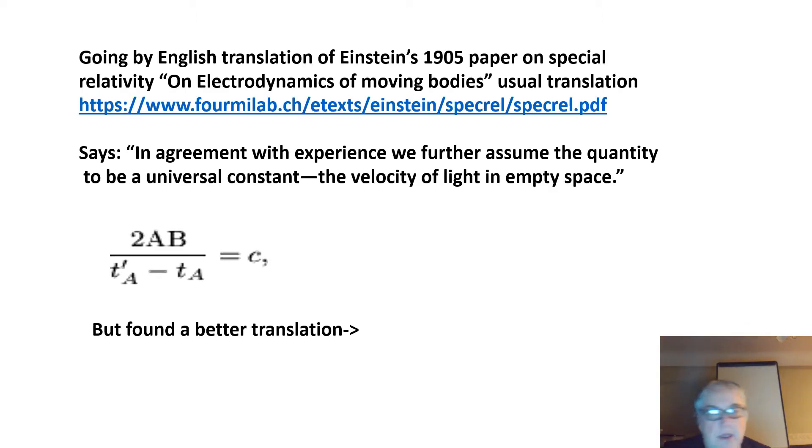Going by the English translation of Einstein's 1905 paper, which is the usual one on the internet—the paper titled 'On the Electrodynamics of Moving Bodies'—it says: 'In agreement with experience we further assume the quantity to be a universal constant—the velocity of light in empty space.' And it then gives this equation.